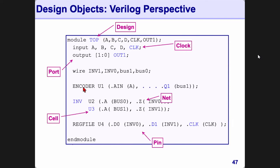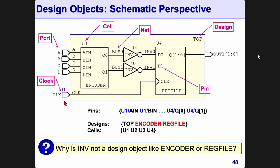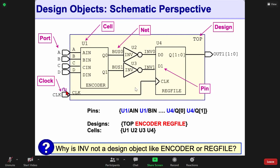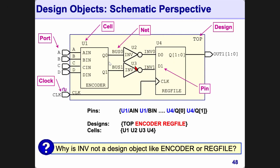One thing to be very careful about is terminology. What is called a cell in DC may be different from what is known as a cell in PnR or custom layout — each tool has its own naming convention. In DC, instances are called cells. From a schematic perspective: you have a clock object, ports, cell names such as u1, u4, u2, u3, nets, and pins such as d0, d1, q0, q1, a_in, b_in, c_in, and the clock.